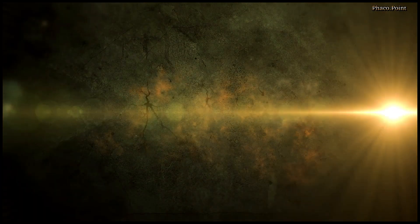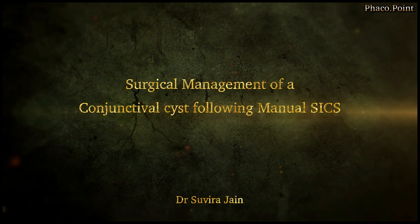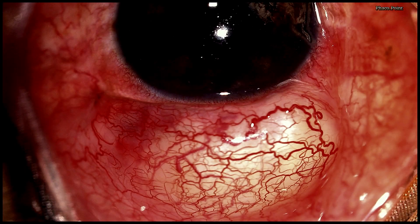Let's look at this very interesting case of a patient who underwent manual SICS cataract surgery and a month post-operatively presented with the clinical appearance of a large subconjunctival bleb superiorly. The rest of the eye appeared normal — the cornea, the anterior chamber depth, the PCIOL, which was well-centered in its place. Now how would you manage a case like this?